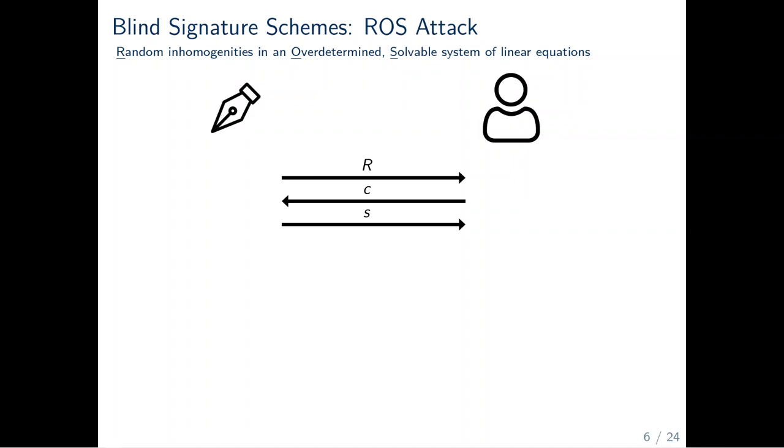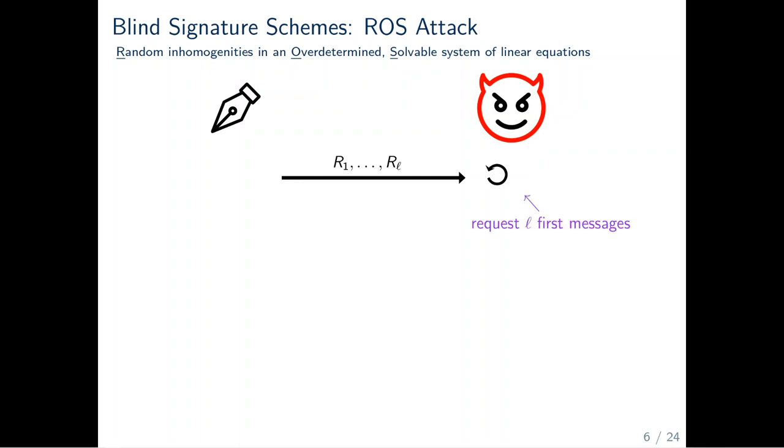Three move blind signature schemes are susceptible to the so-called ROS attack against the OMUF security, where ROS stands for random inhomogeneities in an over-determined solvable system of linear equations. The ROS attack can be seen as a specific attack against OMUF security of three move blind signature schemes. It works roughly as follows. The attacker takes the role of the user in the OMUF experiment. The first thing the attacker does is to request L first messages R1 to RL,